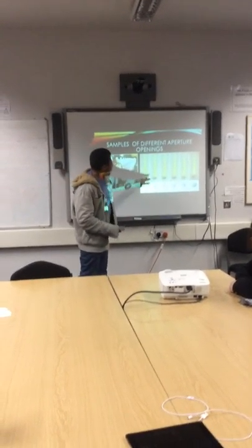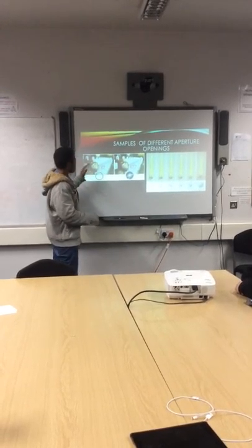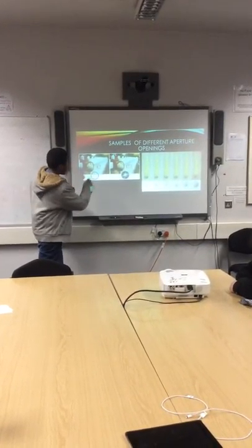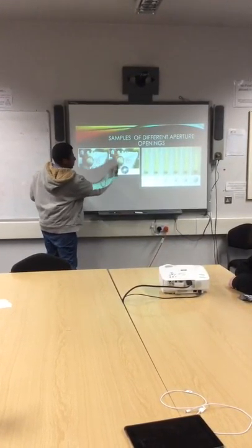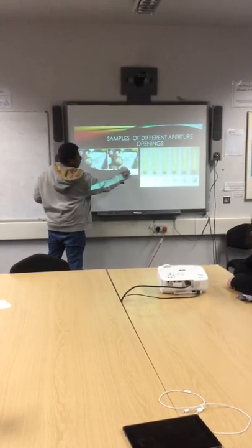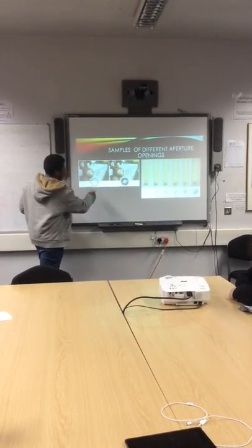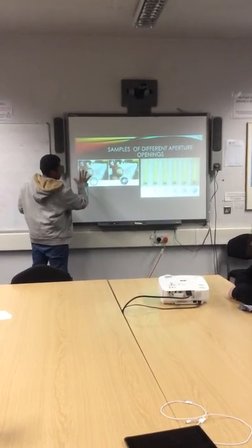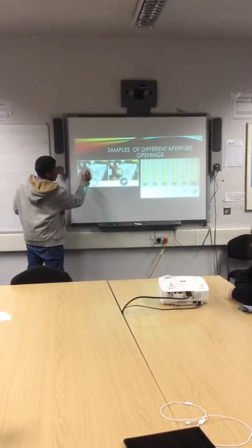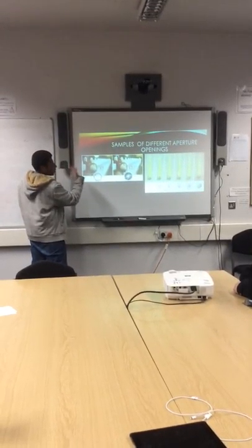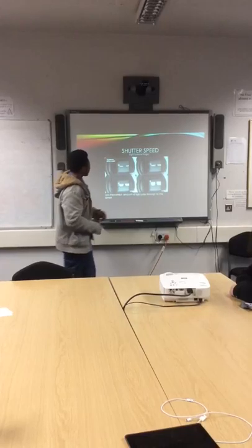Depth of field. So when you've got a small aperture, there's more detail in the picture. A wider aperture creates less detail and it focuses on the subject in front of it.